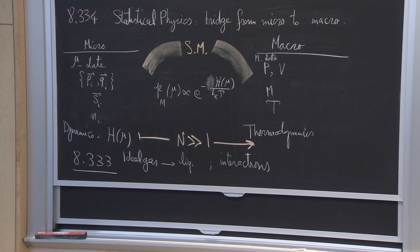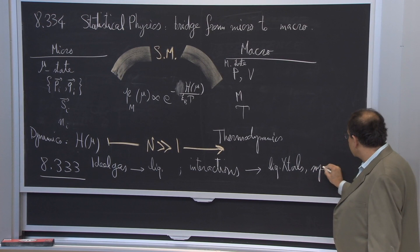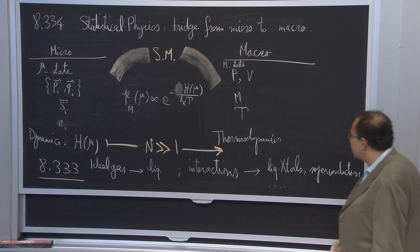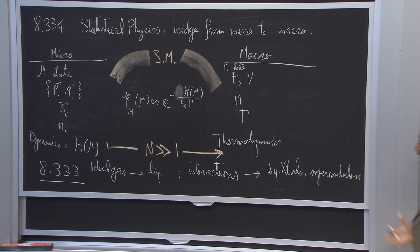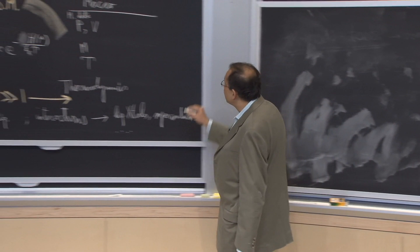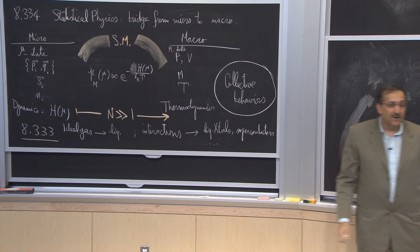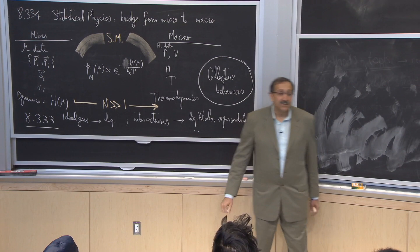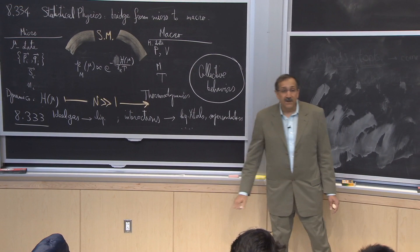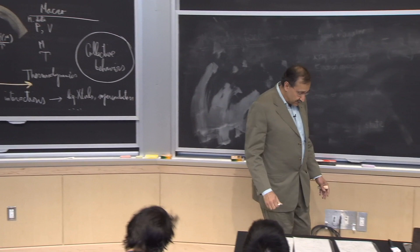There are much more interesting things that happen with interactions. You could have other phases of matter such as liquid crystals, superconductors, and many others. The key idea is that you can solve things that are non-interacting, but when you add interactions, you get interesting collective behaviors. In 8.334, as opposed to just building the machinery in 8.333, we want to think about all the different types of collective behavior possible and how to describe them in the realm of classical systems.